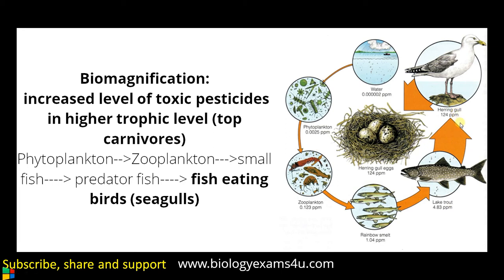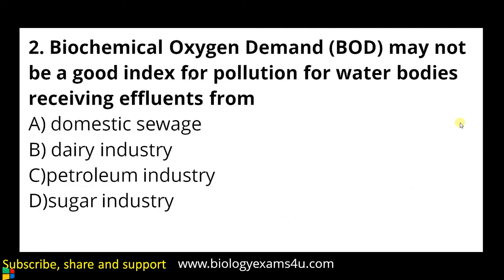So the process of increased concentration of toxic pesticides at higher trophic levels, especially at the carnivore level, is called biomagnification. Whenever you get a question like this, identify the top carnivore — the top carnivore will have the maximum concentration of that toxic pesticide or chemical.